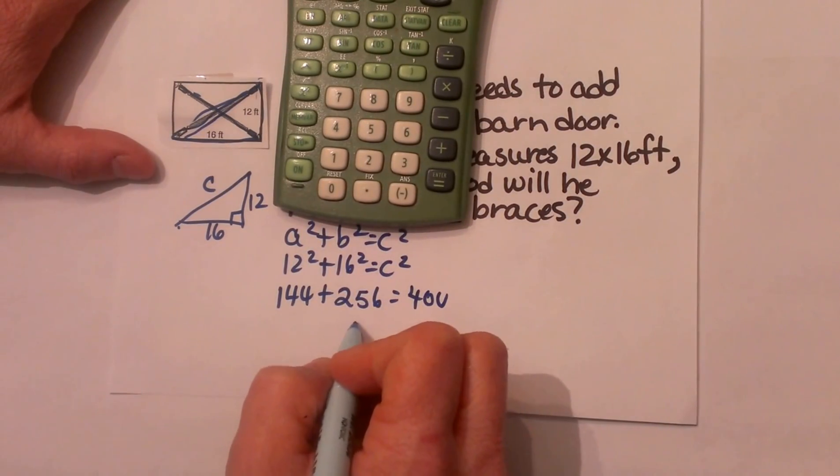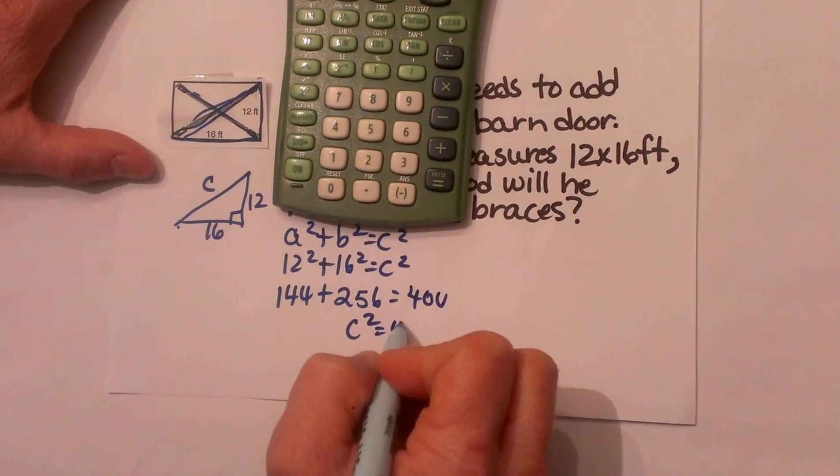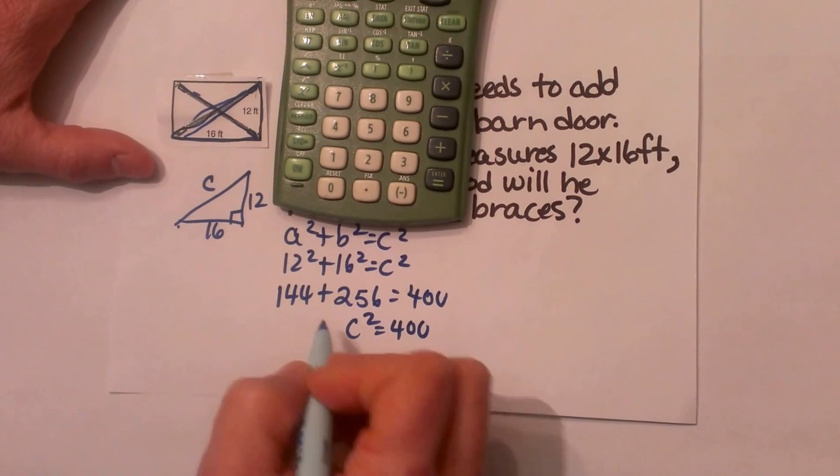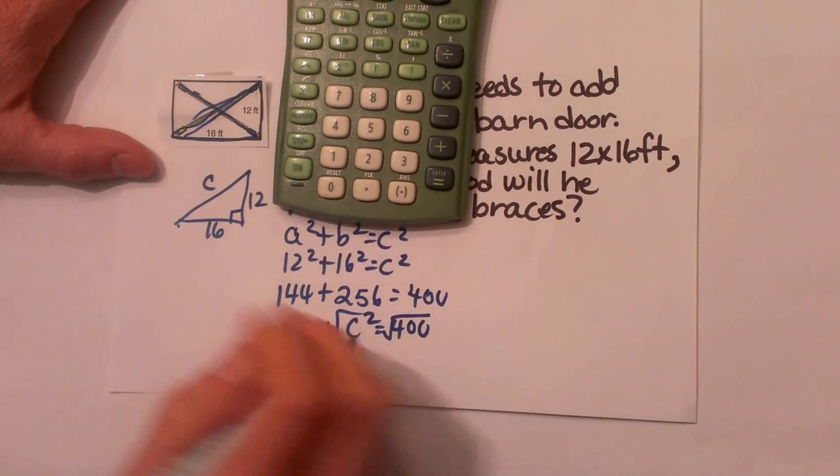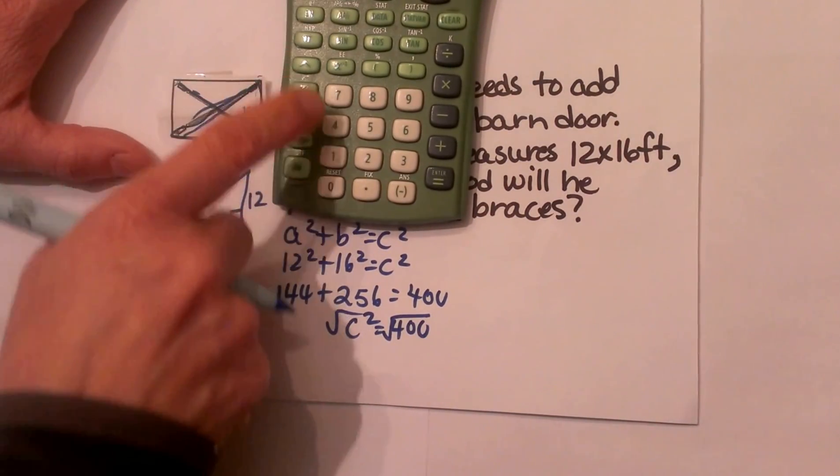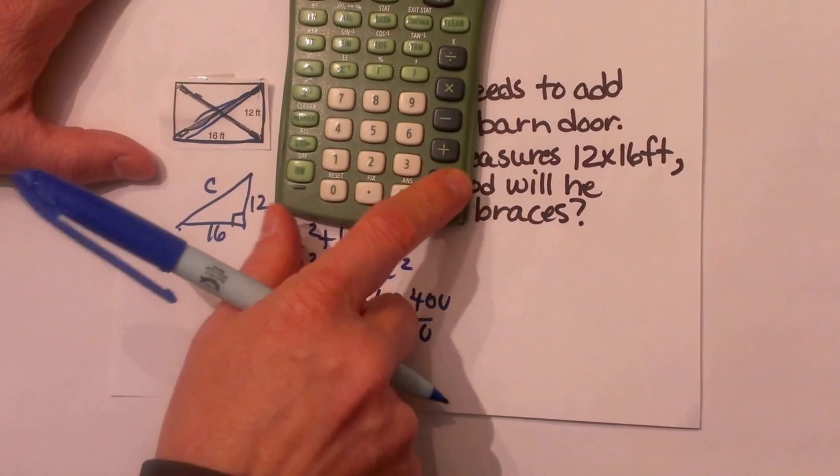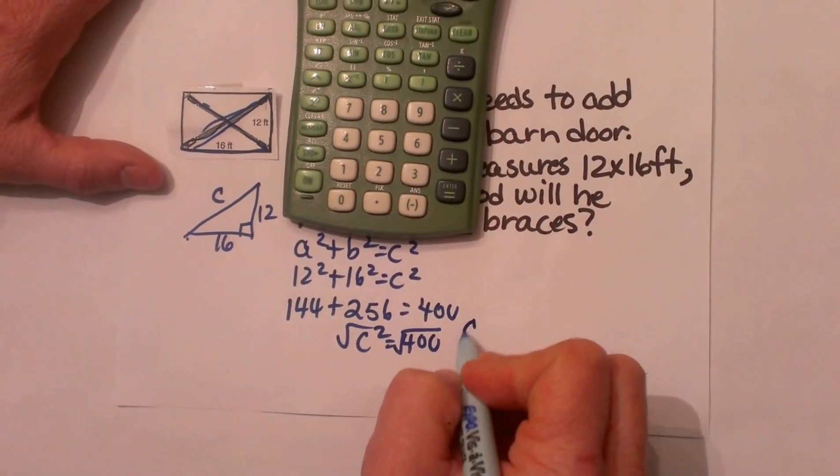Okay and that is equal to, so c² = 400. Now to undo that I will take the square root of both sides. So I am going to take the square root of 400 and I get 20. So c is 20.